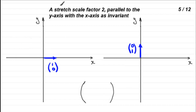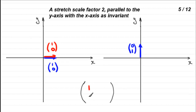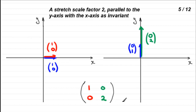For number 5, a stretch scale factor 2 parallel to the y-axis with the x-axis as invariant. Since the x-axis is invariant, the vector (1, 0) remains at (1, 0) — any points on that axis stay the same. For (0, 1), stretching parallel to the y-axis increases it by a factor of 2, so it becomes (0, 2). The matrix has columns (1, 0) and (0, 2).